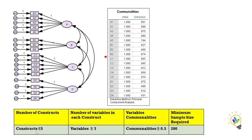In this model, the number of constructs is less than or equal to five — we have four constructs. The number of variables in each construct is more than or equal to three; the maximum is five and the minimum is three, so this condition is satisfied. Coming to communalities, for each variable — for example, A1 communality is 0.851 — and all other variables are more than 0.5. We can get communality from factor analysis as well. So constructs are less than or equal to five, variables per construct are more than or equal to three, and communality is greater than or equal to 0.5. Therefore, the minimum sample size required is 200.